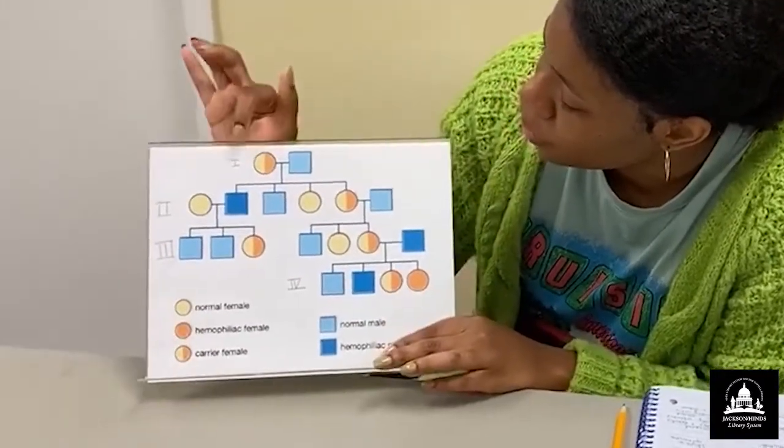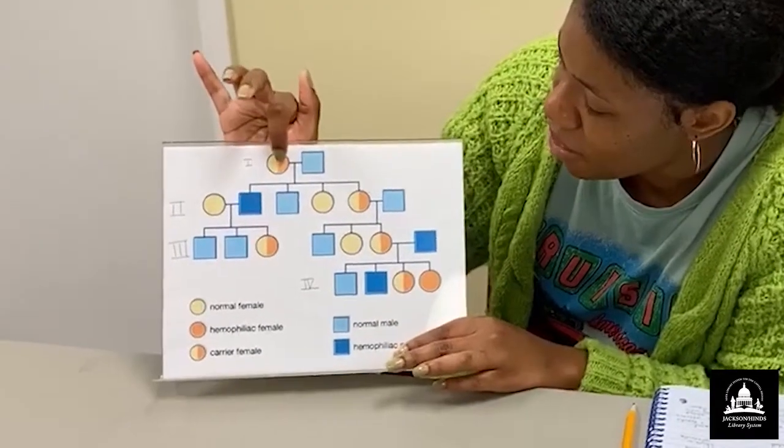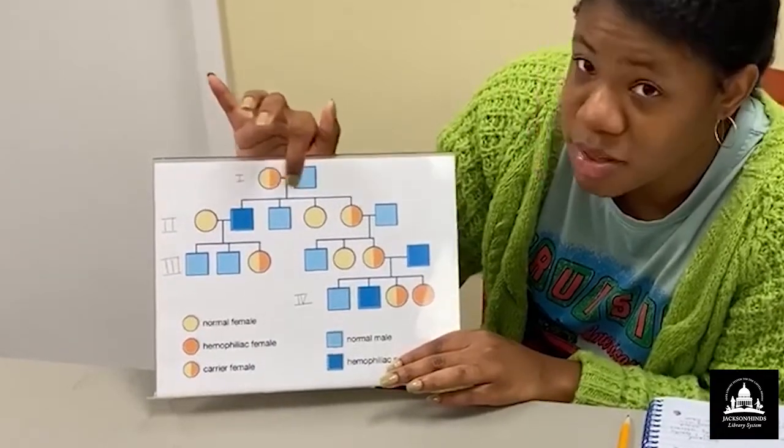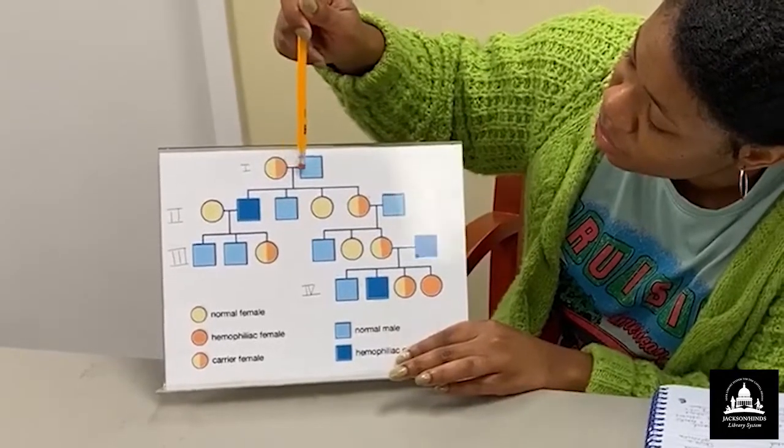Okay, so this is our first generation and we have a female and a male. So between them is a horizontal line. And what this horizontal line indicates is marriage.